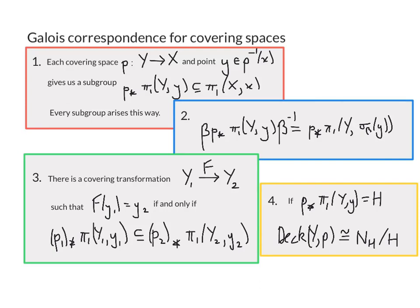I'm now going to talk about the Galois correspondence for covering spaces. I'm going to be putting together a load of stuff we've already seen and call the whole package the Galois correspondence. First, we've seen that a covering space Y of X, together with a base point little y in the pre-image of little x, gives rise to a subgroup p* π₁(Y, y) inside the fundamental group π₁(X, x). Moreover, we've just seen that provided there exists a universal cover, every subgroup arises this way — for every covering space there's a subgroup, for every subgroup there's a covering space. This is the first fact that feeds into the Galois correspondence: a correspondence between covering spaces and subgroups of the fundamental group.